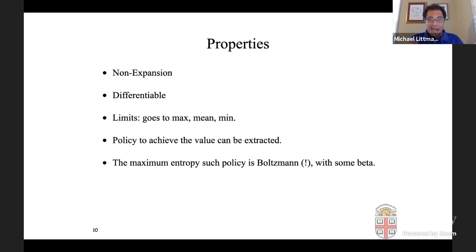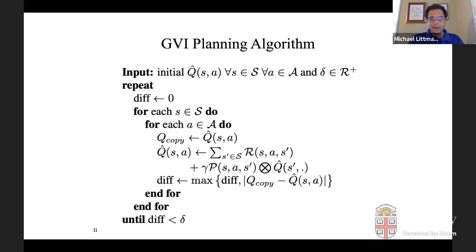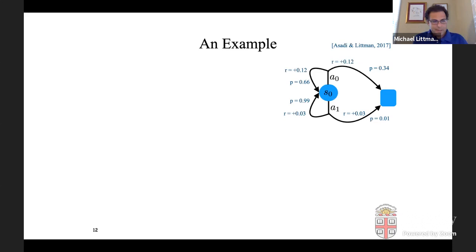The maximum entropy such policy has the Boltzmann form, which is neat, but you don't get to pick the Boltzmann parameter. It's going to pick that parameter so that it has this property. So it summarizes to this particular value. All right. And so we can plug it into generalized value iteration and we get an algorithm. And so we've been playing with this algorithm.